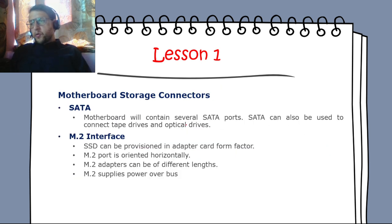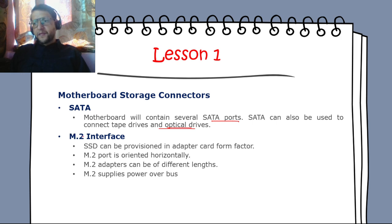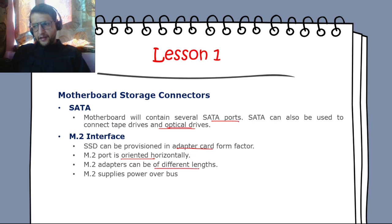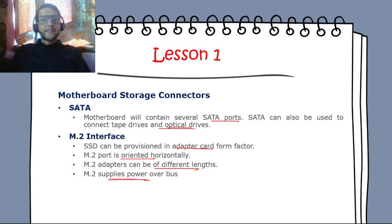The motherboard contains several SATA ports; SATA can also connect tape drives and optical drives. The M.2 interface allows SSDs to be provisioned in either adapter card or M.2 form factor. M.2 ports are oriented horizontally, adapters can be of different lengths, and M.2 supplies power over the bus — that is the key difference from eSATA.